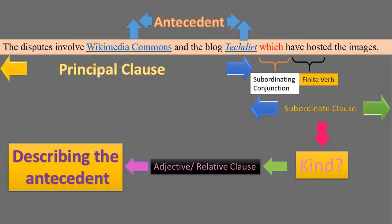But how can we tell that this is an adjective or a relative clause? The reason is: look at the antecedent. Wikimedia Commons and Take Dirt — both are nouns. So this subordinating conjunction is actually illustrating, describing, and qualifying this antecedent, and hence it is an adjective or a relative clause. My point is clear.